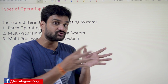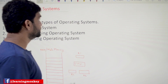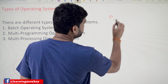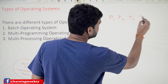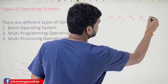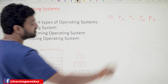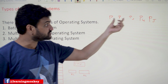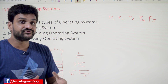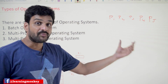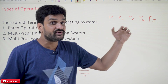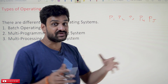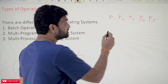All the programs that we want to execute have to be provided to the operator. Now, what the operator will do — for example, assume there are five different programs: program one, program two, program three, program four, program five — provided by five different users who want their programs to get executed on the computer. They will provide these programs to the computer operator, and the operator will identify similar types of programs.